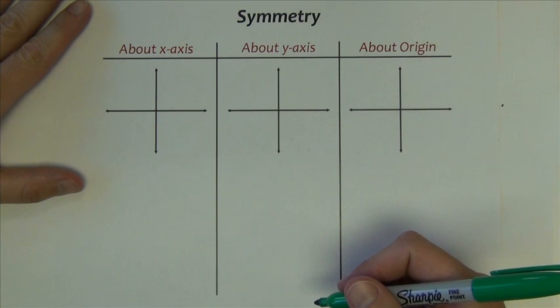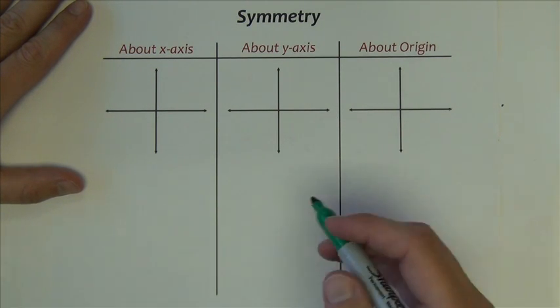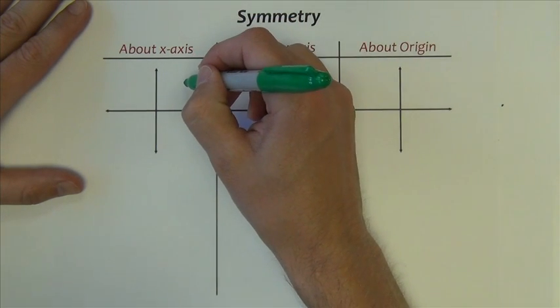Next thing we're going to talk about is symmetry. Symmetry can happen three different ways. We can have a graph that is symmetric about the x-axis.